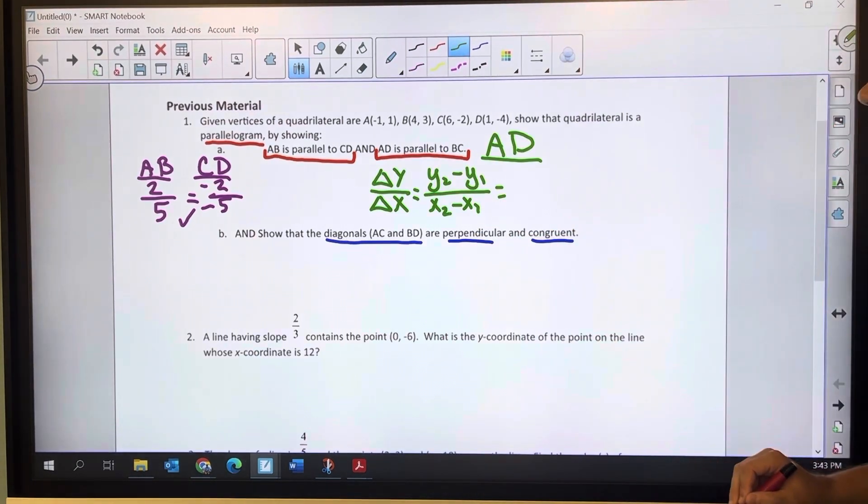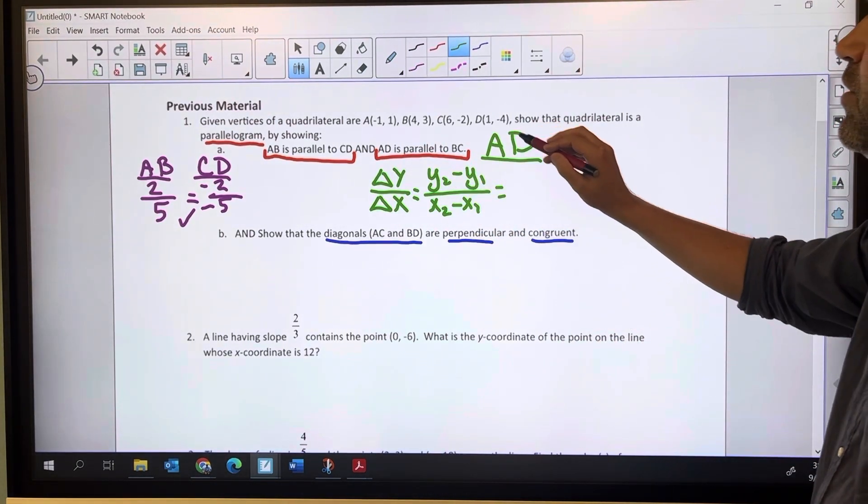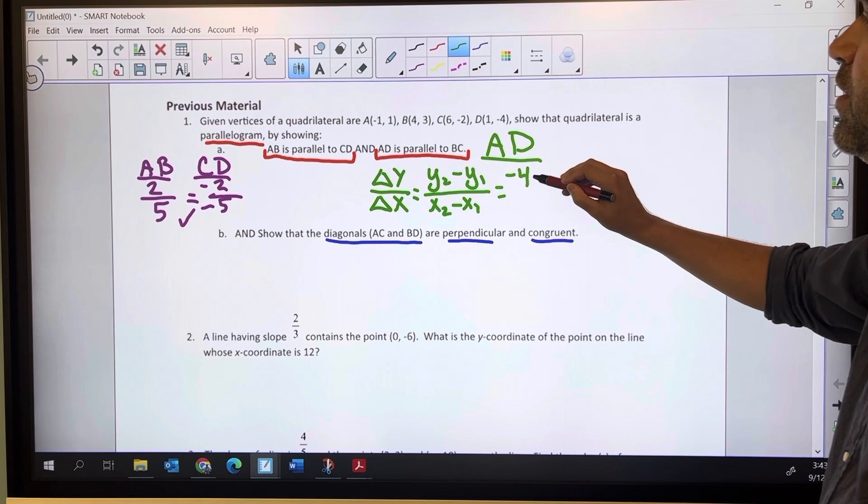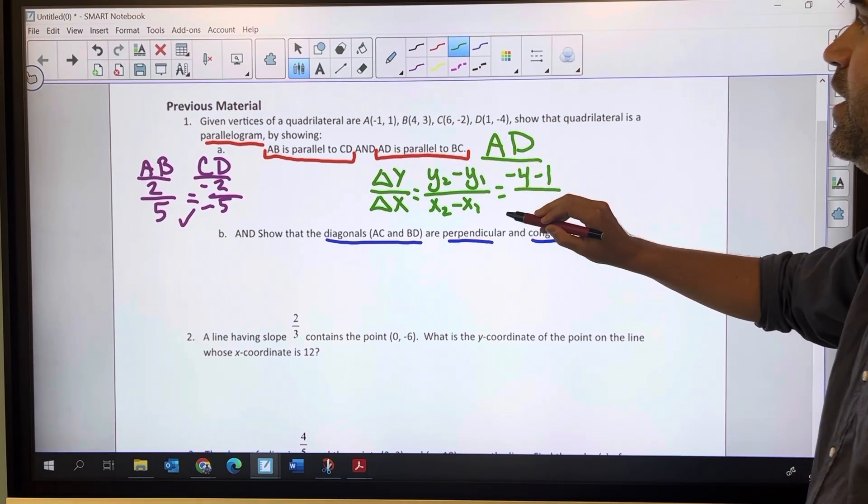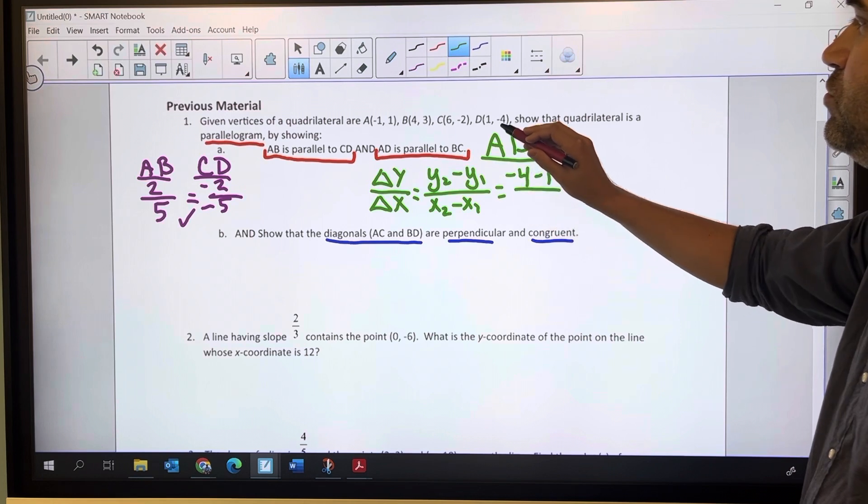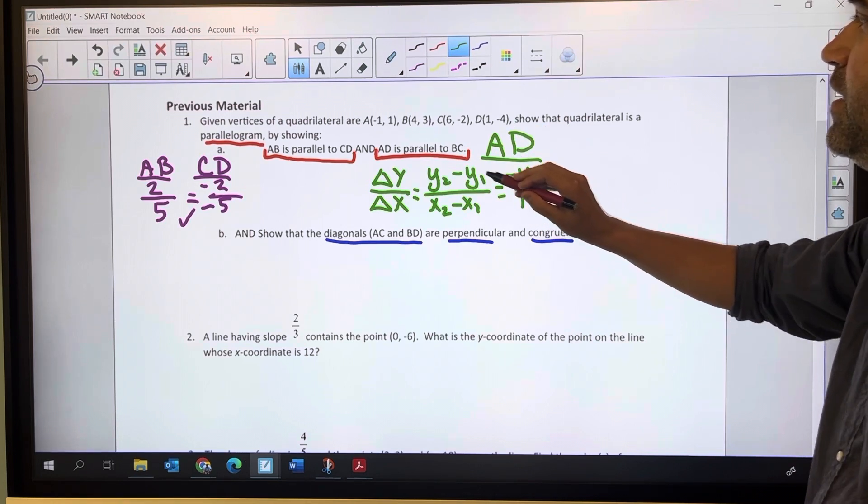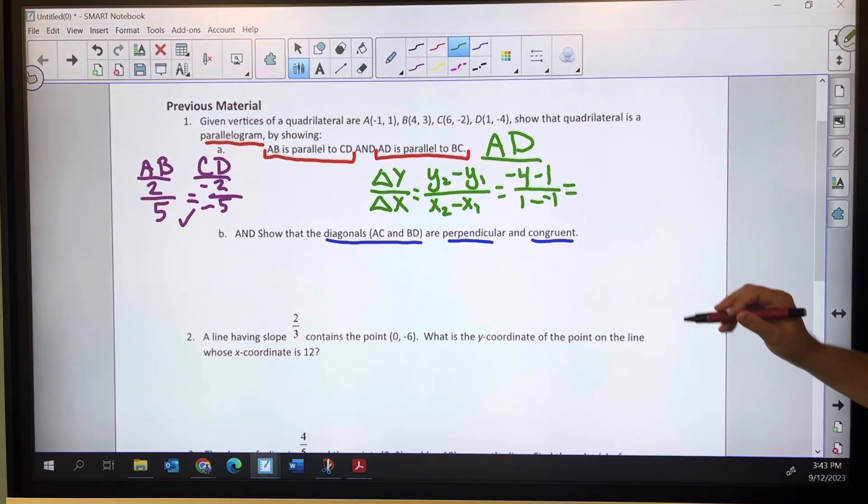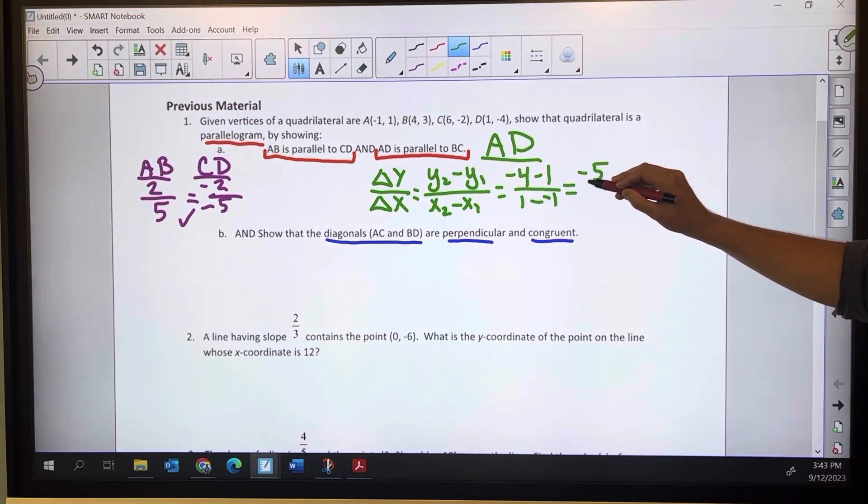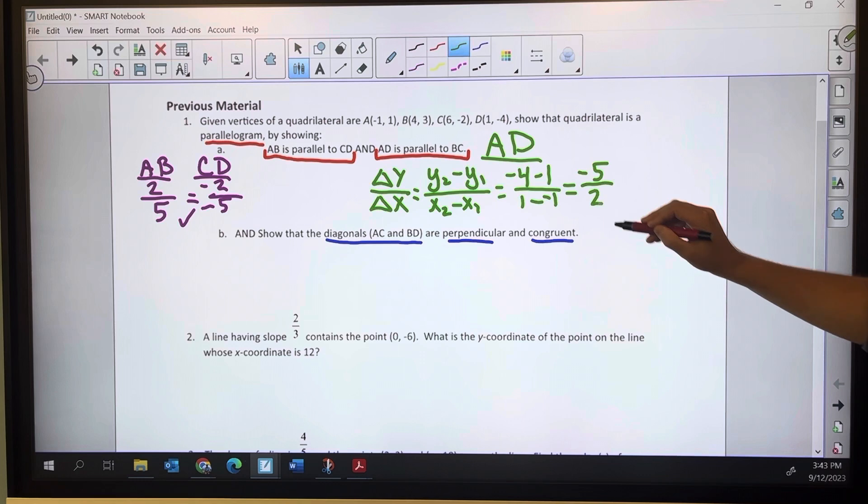Which for AD, Y2, let's call it negative 4, minus Y1, let's call that 1, and then X2 is 1 minus X1 negative 1. Negative 4 minus 1 is negative 5. 1 minus negative 1 is 2. So we've got negative 5 halves for AD's slope.